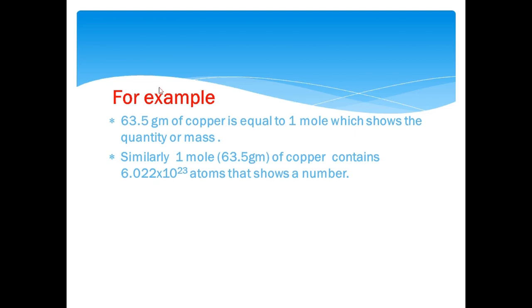For example, if we weigh 63.5 gram of copper in a laboratory, then it will be equal to one mole which shows the mass or quantity of copper. 1 mole or 63.5 gram of copper also contains 6.022 × 10²³ atoms of copper, that shows a number of matter. We say that mole shows both number and quantity of a matter.